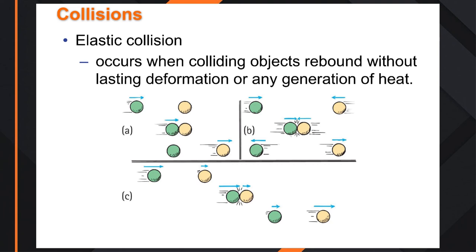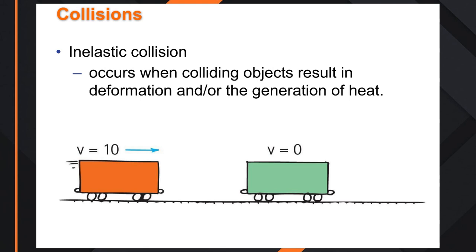Our types of collision: an elastic collision occurs when colliding objects rebound without lasting deformation or any generation of heat — like bumper cars at the fair. Two objects come in contact, hit each other, and bounce off. An inelastic collision is where objects collide and there is deformation or generation of heat — like two railroad cars that come in contact, couple together, and are stuck together afterwards.